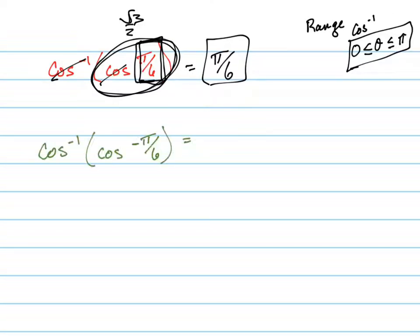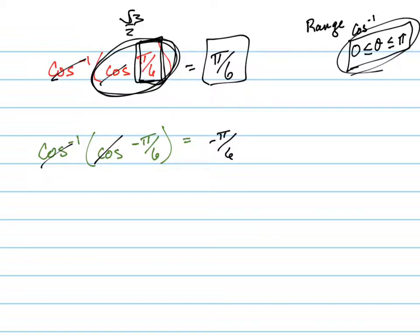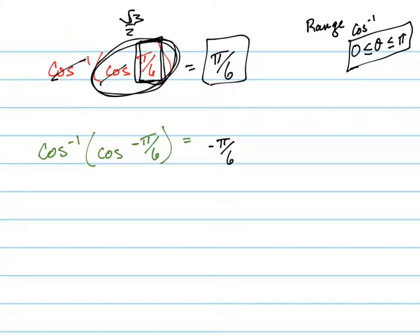Now the trick comes in when you have a problem like this: what's the cosine inverse of the cosine of negative π/6? You can't just cancel those out, because negative π/6 is not included in the range. So you can't do that — that is not true. Instead, what you do is cancel them, but then you have to recognize that's not in your range and ask: which angle has the same cosine as negative π/6, but is in this range?